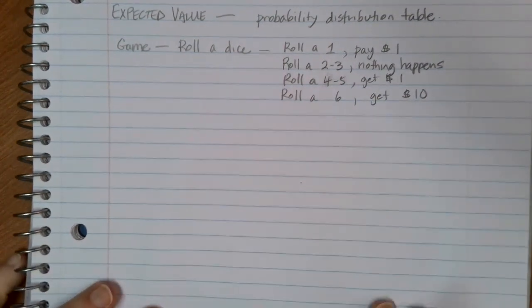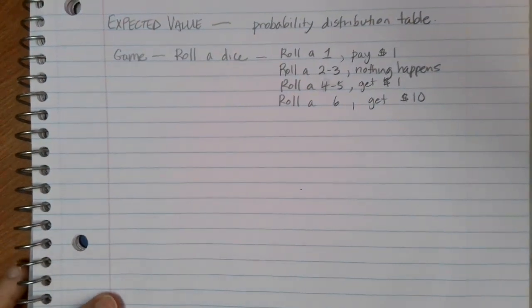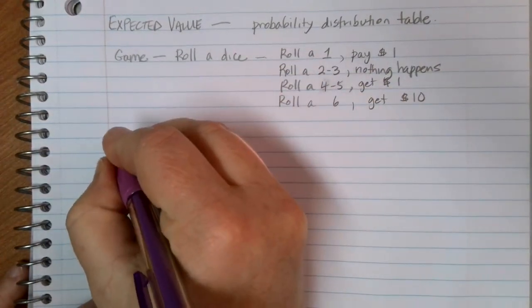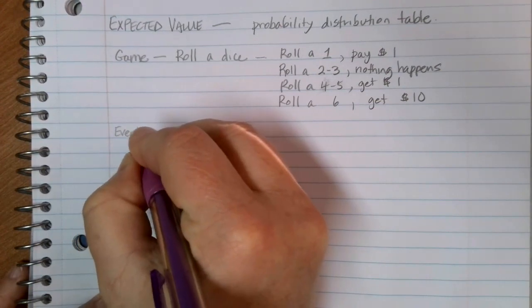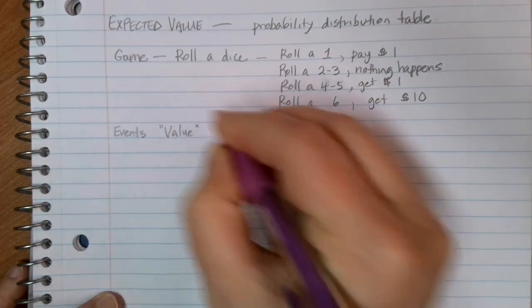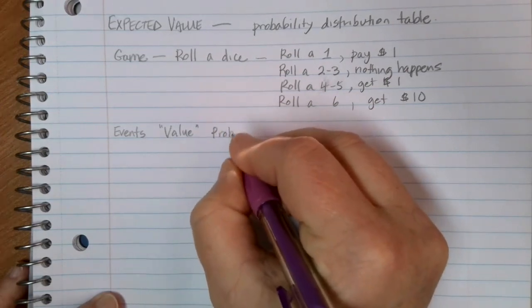If we're making a probability distribution table, what we're interested in doing is figuring out what events might happen, what the value of that event is, and what the probability of that occurring is.